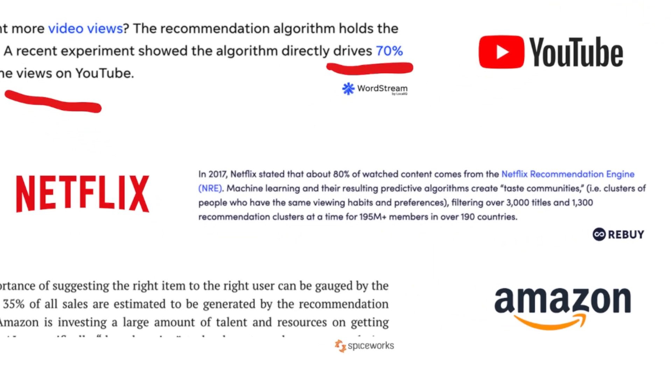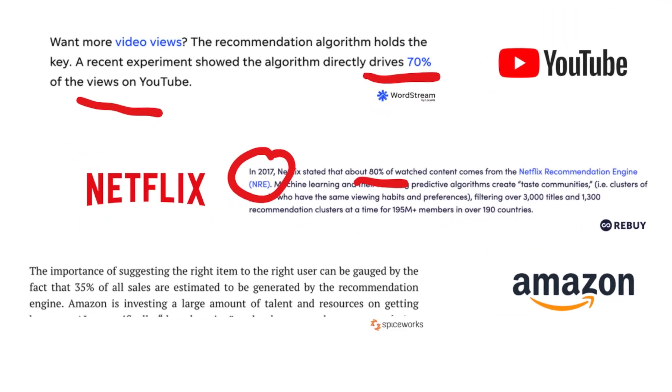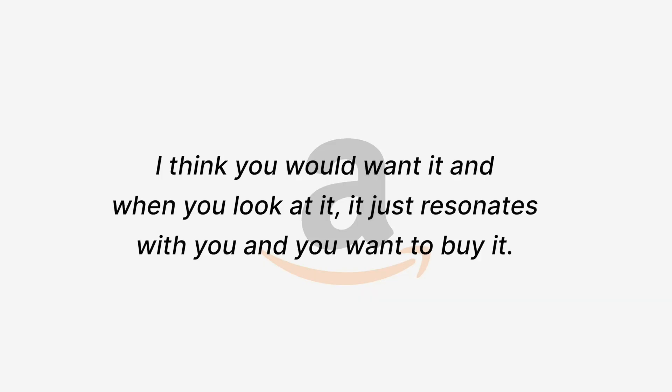The same thing applies to Netflix. This number is a little old — from 2017 — but 80% of watched videos on Netflix are based on recommendations. Similarly, we are seeing this in the shopping industry. For Amazon, 35% of sales come from recommendations. When online shopping wasn't a thing, people would know what they wanted and go ask a shopkeeper for it. But now, 35% of the stuff you don't even ask for — Amazon tells you it thinks you would want it, and when you look at it, it just resonates with you and you want to buy it. This is the power of intelligent use of data.